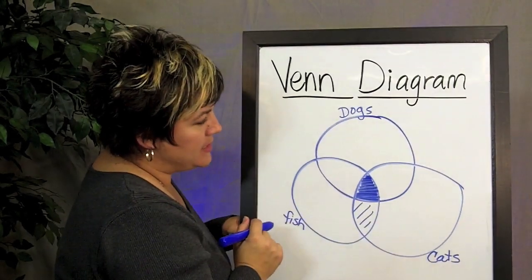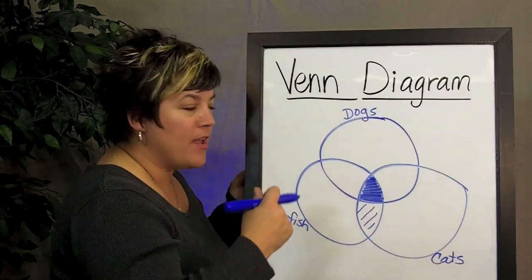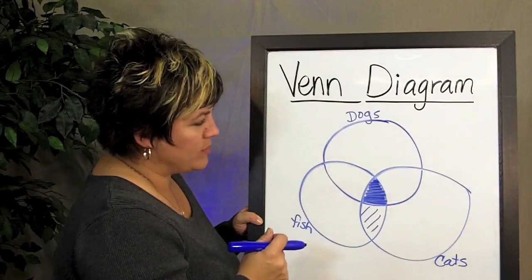And so in that small space in the center where all three circles intersect, that's where I'm going to put the people that like those, all three of those together.